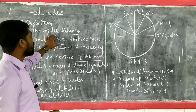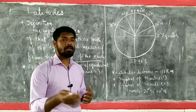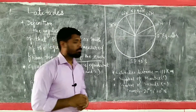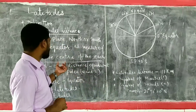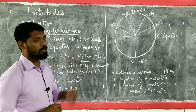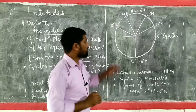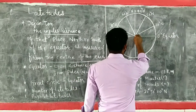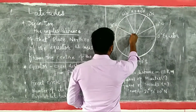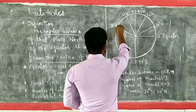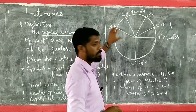Angular distance means every latitude makes an angle — 1 degree angle, 2 degree angle, 3 degree angle, 30 degree angle — going up to 90 degrees north. Similarly, 1 degree angle, 2 degree angle to the south of the equator, and they are all measured from the center. Please refer your textbook alongside this video. For example, 30 degrees north is measured from the center of the earth — that is why it is known as angular distance.